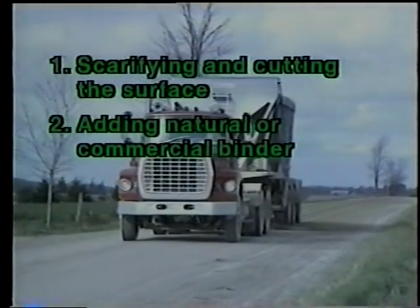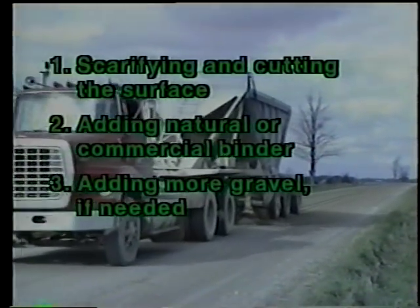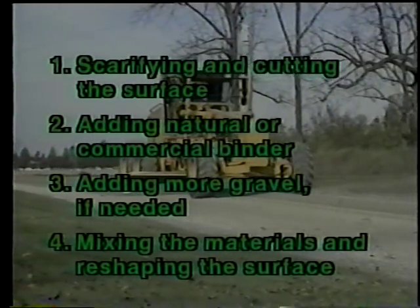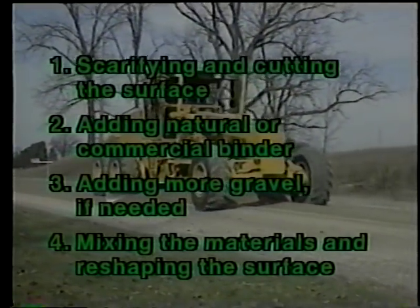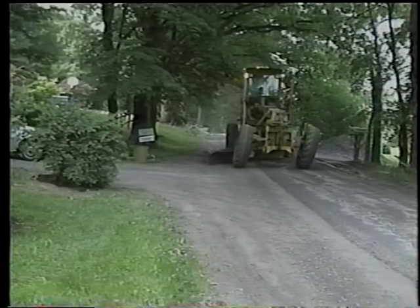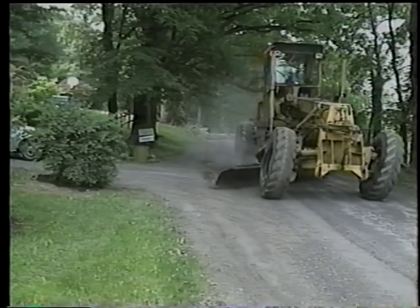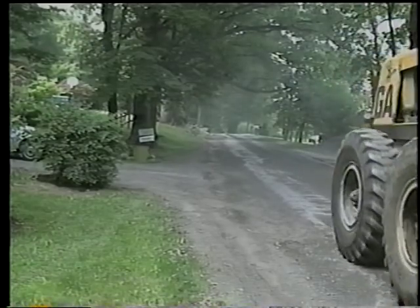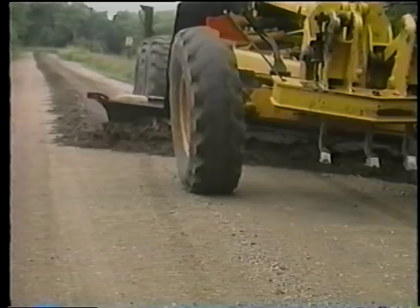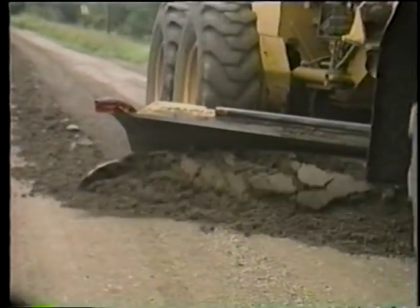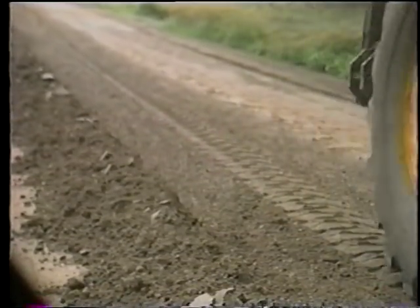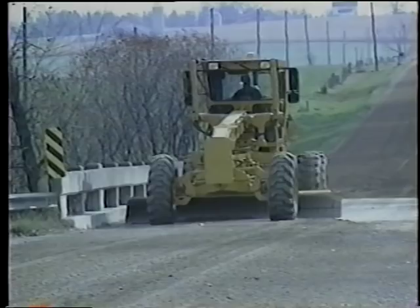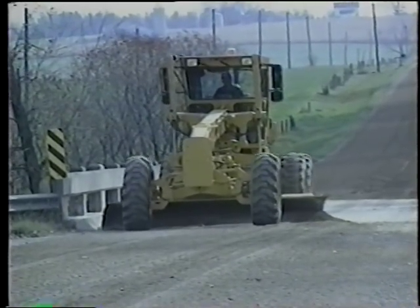Instead, scarifying and cutting the surface is first called for, to a depth just below the bottom of the corrugations, then adding natural or commercial binder, adding more gravel if needed, and finally mixing the materials and reshaping the surface. Spot correction is frequently needed since corrugation may be concentrated at certain locations. Correcting washboarding after rains is always a good idea, since moisture is needed to compact the regraded material and form a tight surface crust. The roadway crown and cross slope should be maintained everywhere, with good transitions at bridges and intersections.